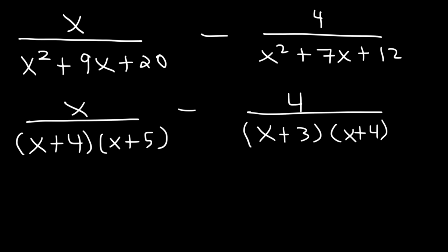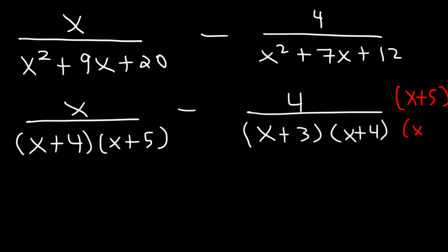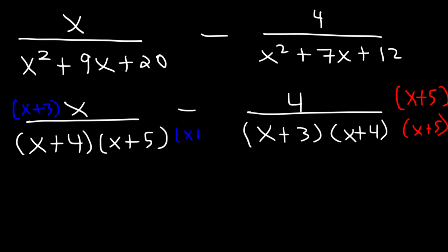Now we need to get common denominators. Both fractions have an x plus 4, so we don't need to worry about that. The fraction on the right does not have x plus 5, so we multiply top and bottom by x plus 5. The fraction on the left does not have x plus 3, so we multiply top and bottom by x plus 3. Now both fractions have the same denominator: x plus 3, x plus 4, and x plus 5. We can now write it as a single fraction.